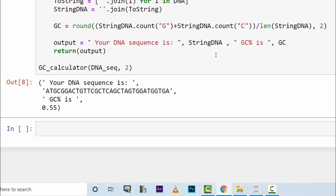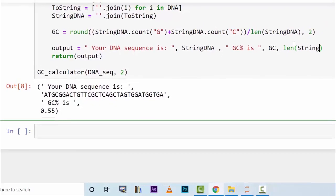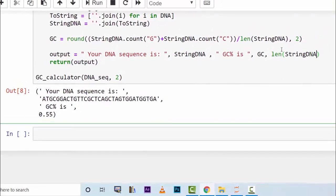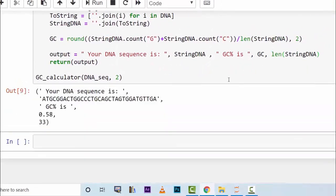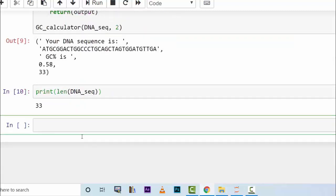So you can also output the length of StringDNA and see it's 33. Now print out the length of DNA_seq and it's 33. So the length has not changed while the N characters have been changed within this DNA sequence.